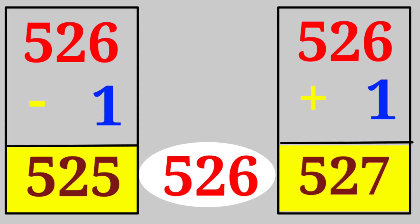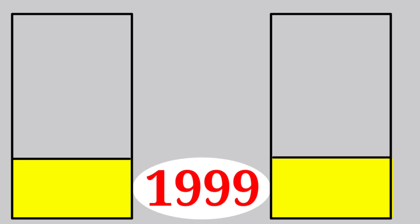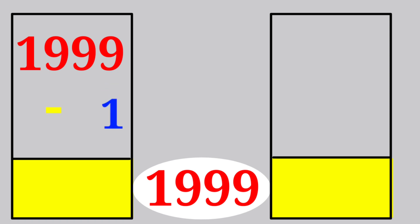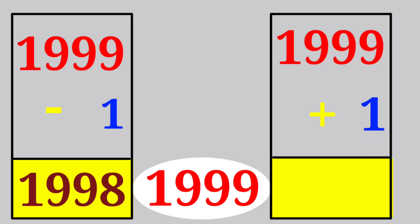The given number is 1999. By subtracting 1 from 1999, we get the number just before: 1998. By adding 1 to 1999, we get the number just after: 2000.